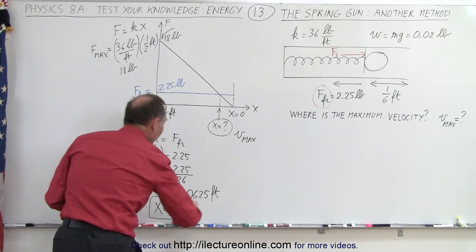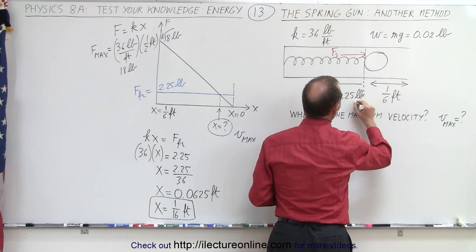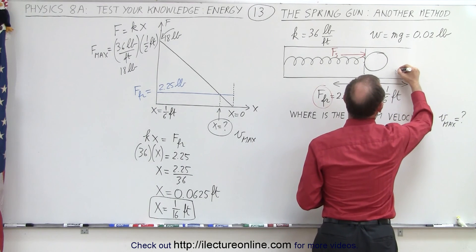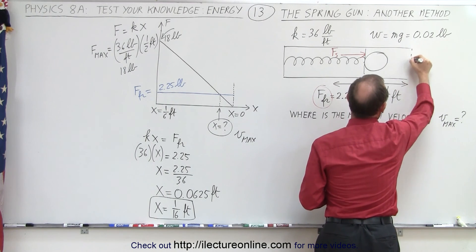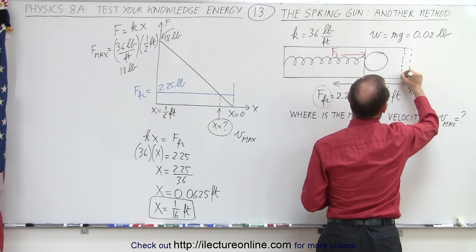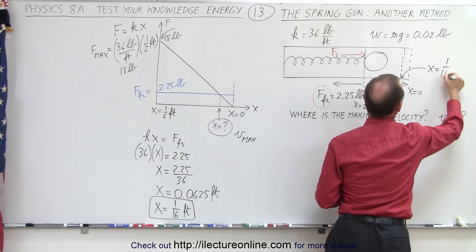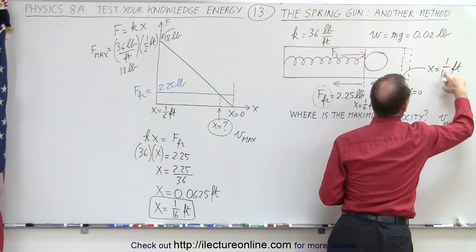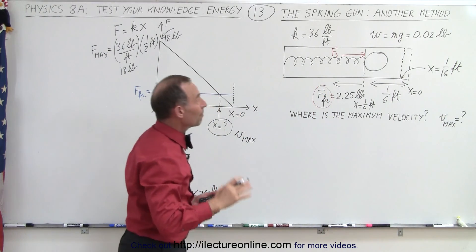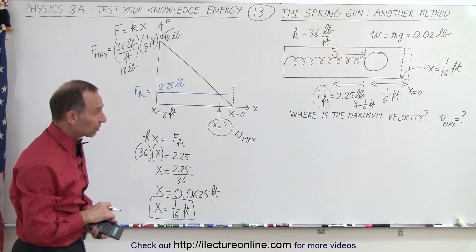So this point here is where x is equal to 1/6th of a foot, and with x equals zero here, that means at a point in the barrel where x equals 1/16th of a foot, that is where we reach the maximum velocity. Now, what is that maximum velocity?